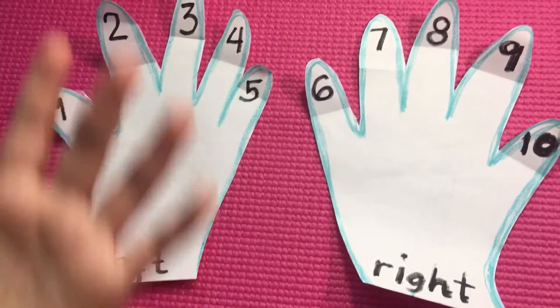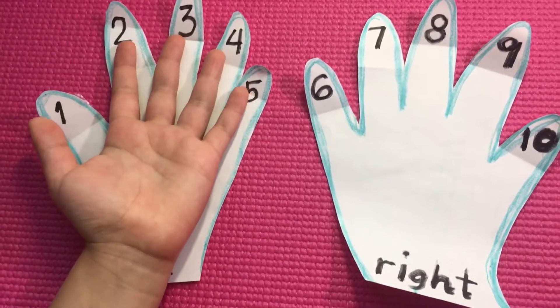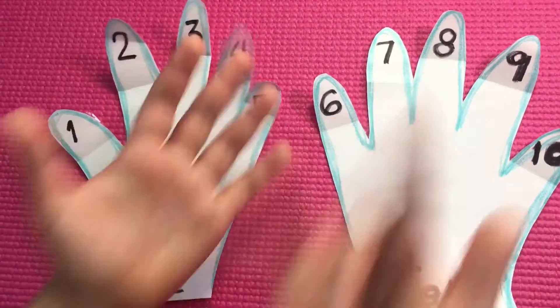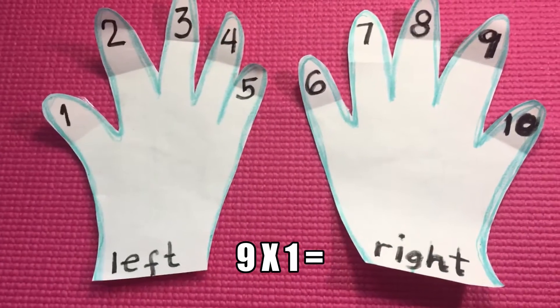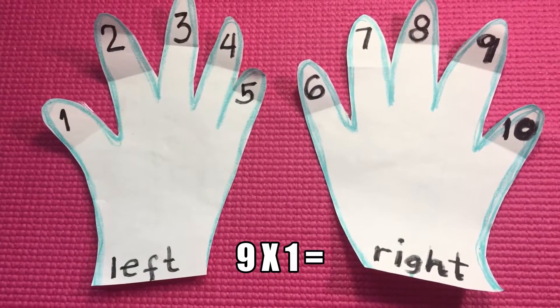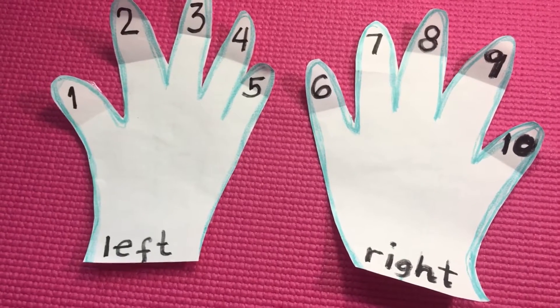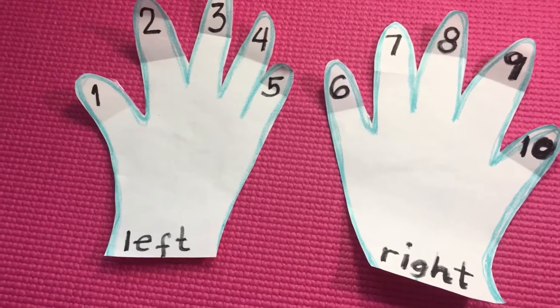Pretend this is my left hand and this is my right hand. Let's try 9 times 1. So remember, we have to number our fingers.